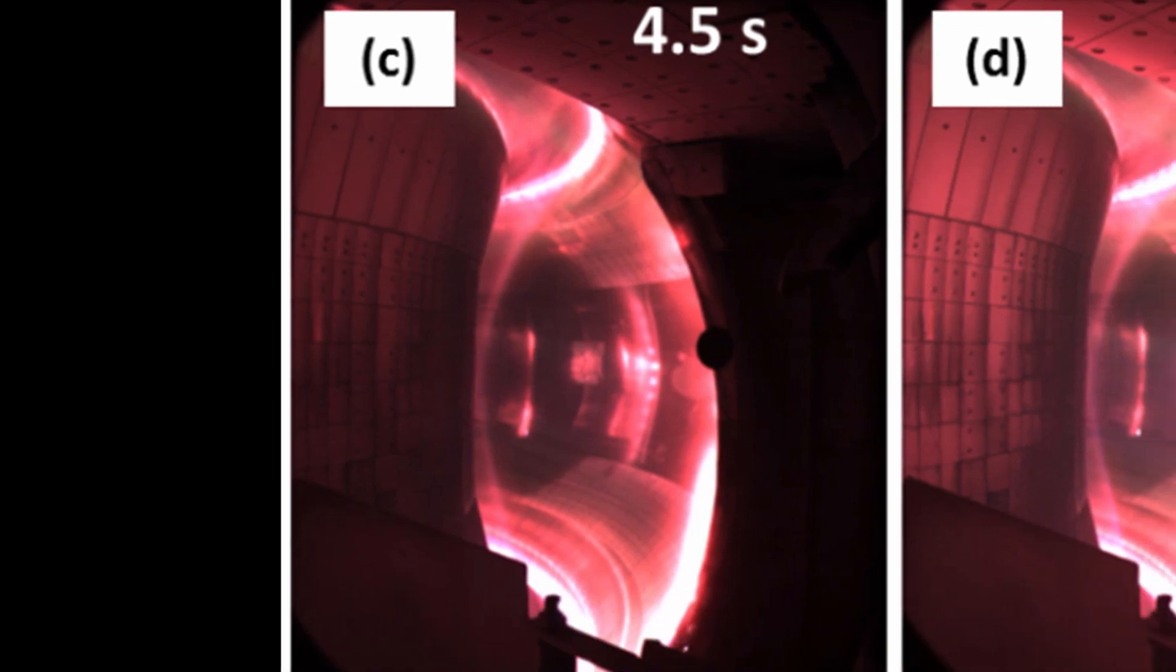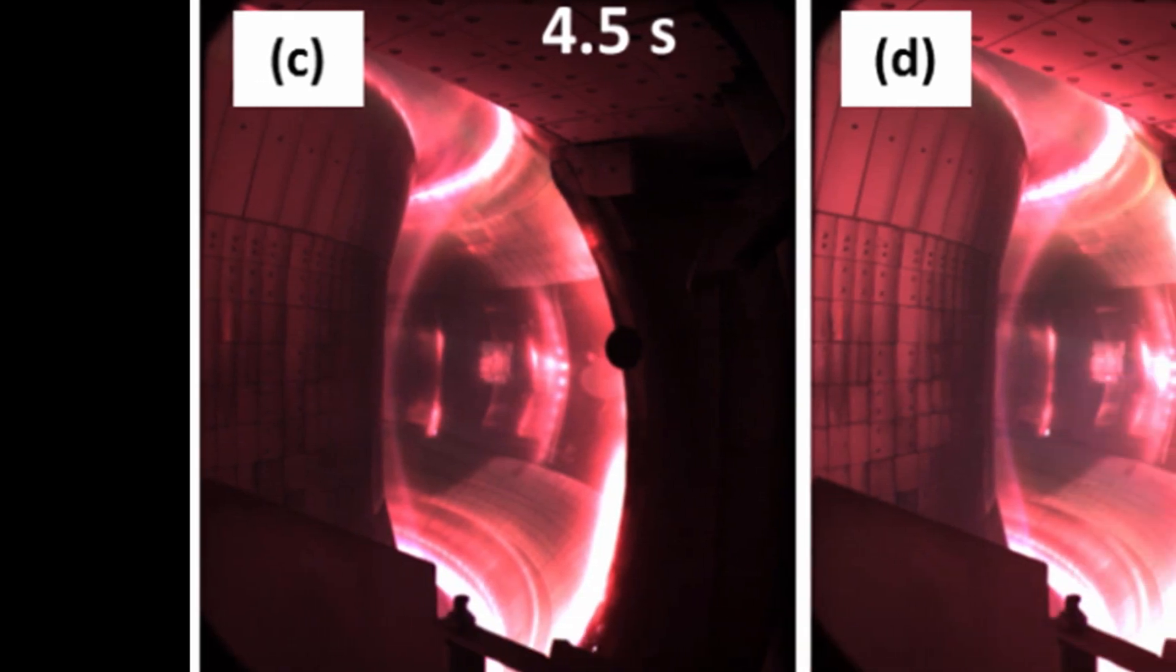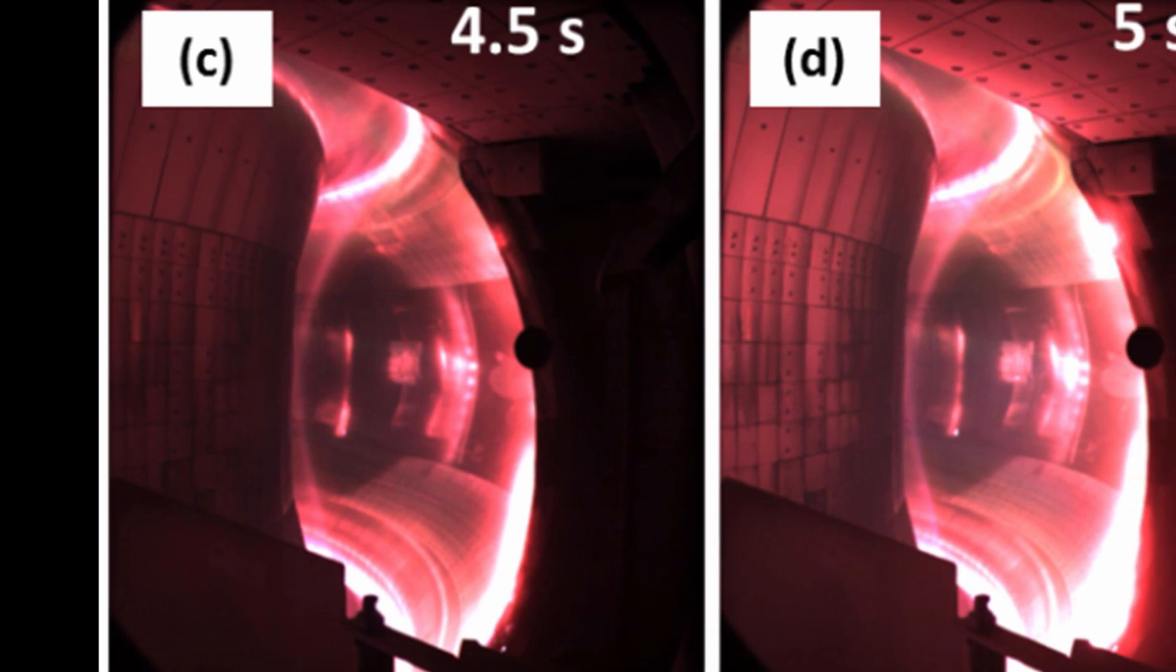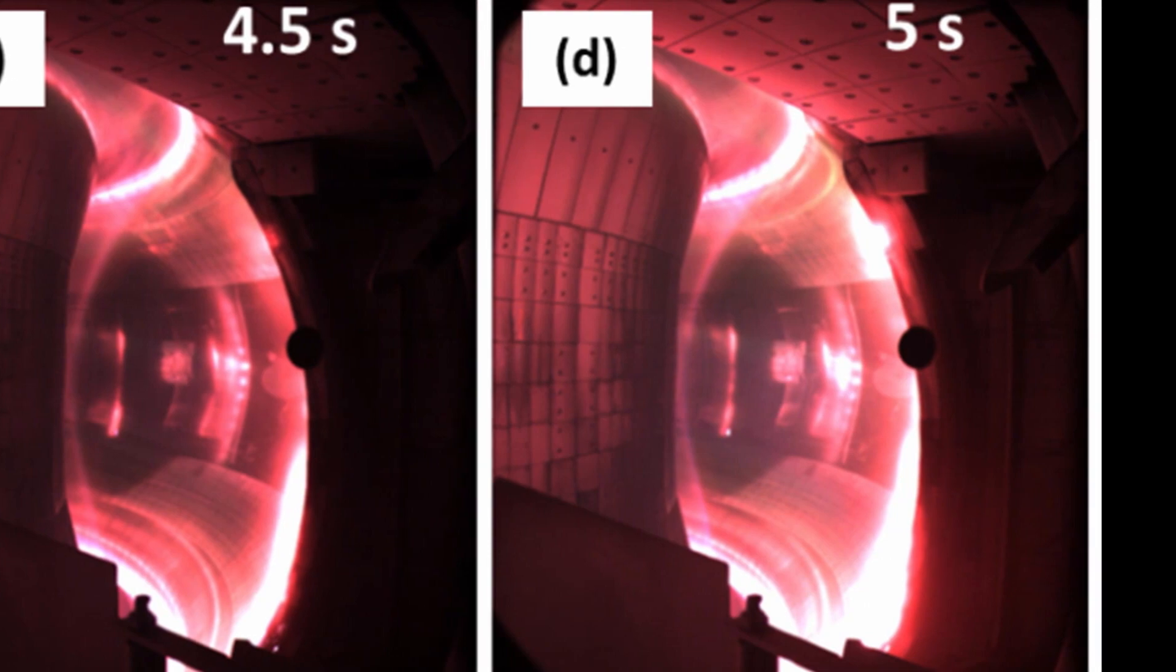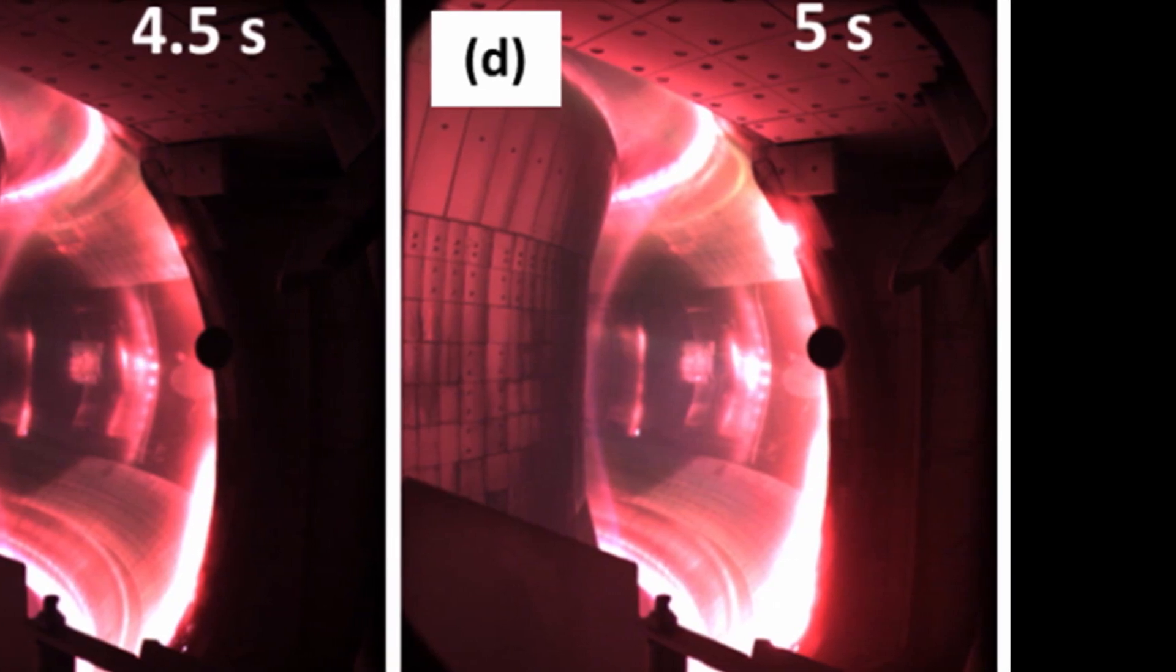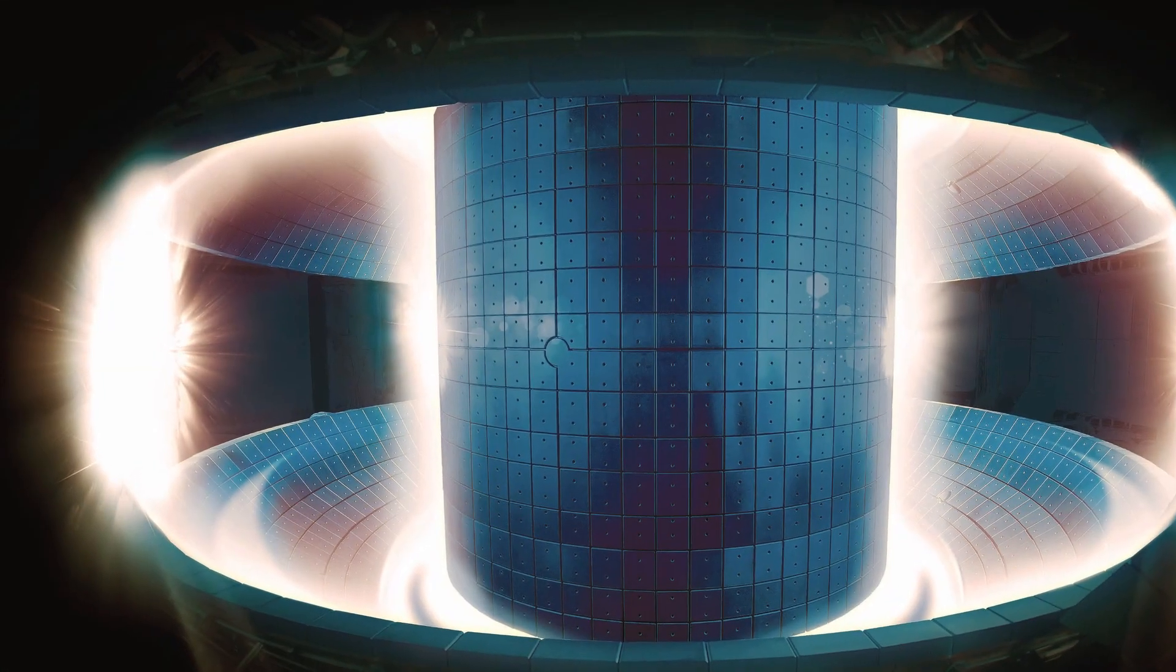Internal transport barriers can be defined as regions of the core plasma where turbulent transport is reduced or quenched. The triggering and sustainment of ITBs are complex issues and are known to depend on a large number of factors.